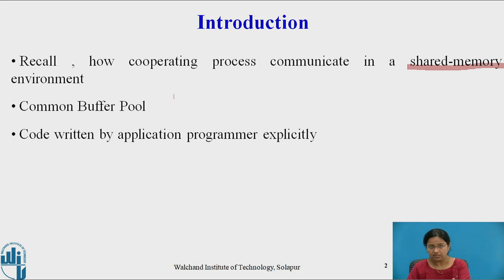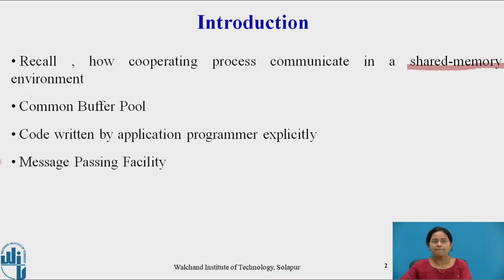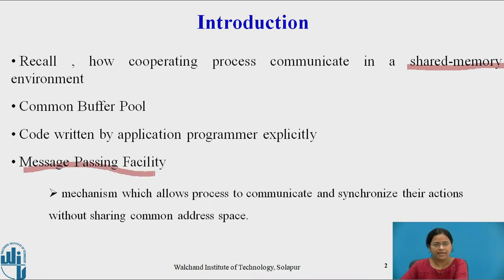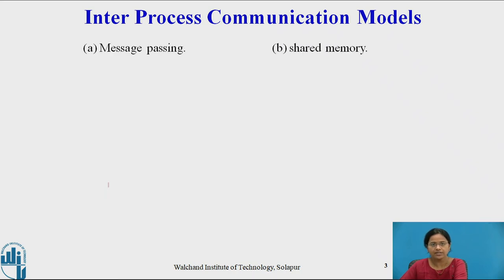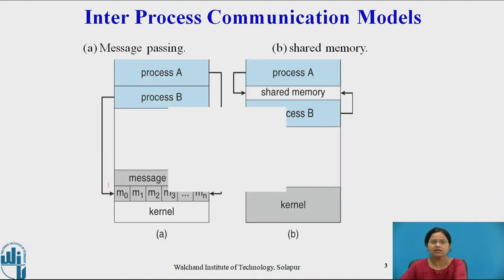To get the same effect of communication between cooperating processes, another facility exists in the operating system called the message passing system. This message passing system is a mechanism which allows processes to communicate and synchronize their actions without sharing a common address space. As we already know, there are two fundamental inter-process communication models: message passing system and shared memory.